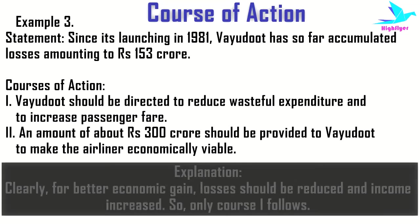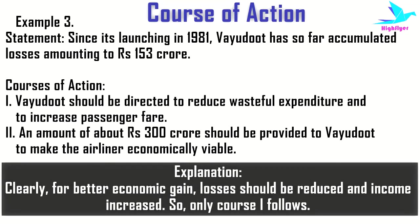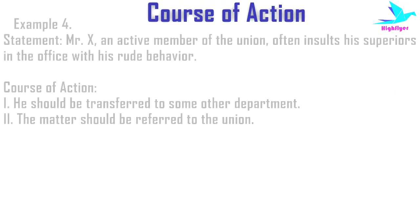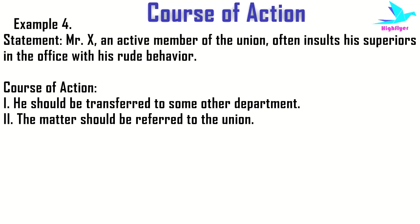The first course of action sounds reasonable because for any better economical gain, losses should be reduced and income should be increased. But as far as the second course of action is concerned, giving financial support to any loss-making entity is never an economically viable solution. Hence, here course of action one will only follow.